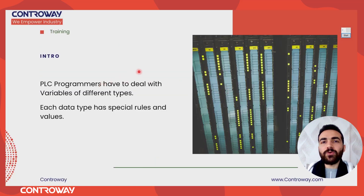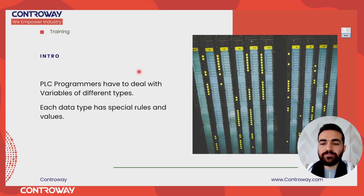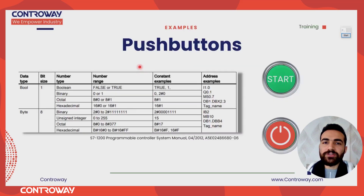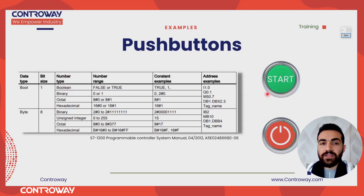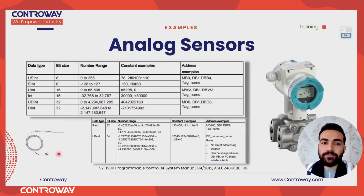As a PLC programmer you have to deal with a lot of signals. Each type of these signals needs a special type of data type. For example, if you are dealing with push buttons you can use the boolean data type because you only have two values — false or true, 0 or 1. And if you are measuring temperature or pressure, you can deal with what we call integer, or real value if you want the decimal point.